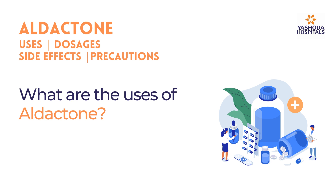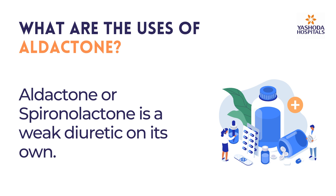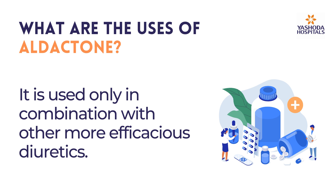What are the uses of Aldactone? Aldactone, or Spironolactone, is a weak diuretic on its own. It is used only in combination with other more efficacious diuretics.